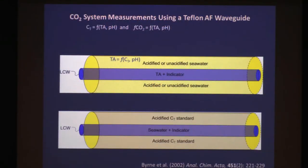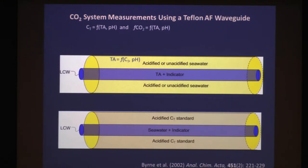As one example: if you fill the inside of one of these waveguides with an artificial solution of known total alkalinity, then equilibrate it with an outer solution of acidified seawater — where all the carbon is in the form of CO₂ — that CO₂ equilibrates with the inside. We also have an indicator inside. Since knowing any two parameters allows you to calculate all others, we make a pH measurement after equilibration, we know the total alkalinity, and we can calculate the total dissolved inorganic carbon in the natural seawater sample.